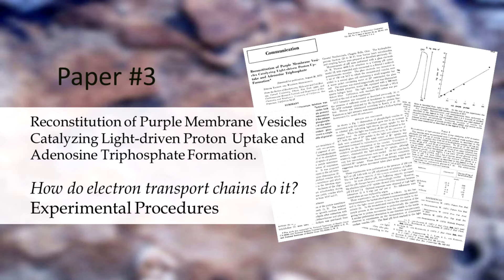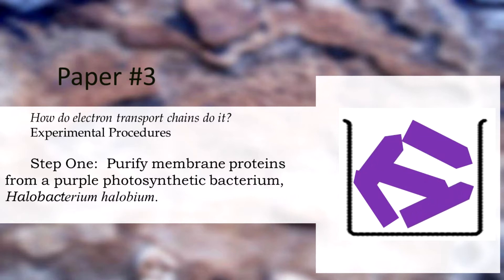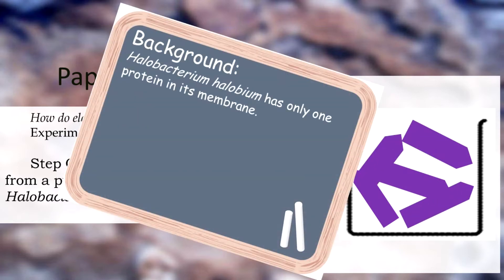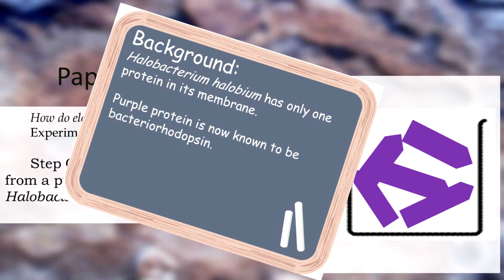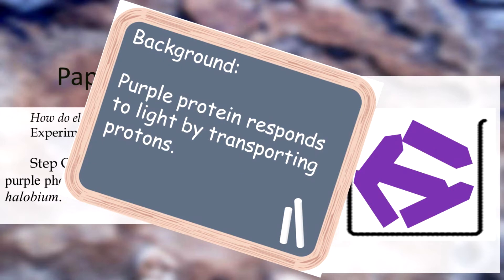The first experimental step was to purify membrane proteins from a purple photosynthetic bacterium called Halobacterium halobium. Halobacterium halobium had only one protein in its membrane. We now know that purple protein is called bacteriorhodopsin. We also now know that Halobacterium halobium is classified as archaea and not bacteria, but those things were not known in 1974. The purple protein responds to light by transporting protons.